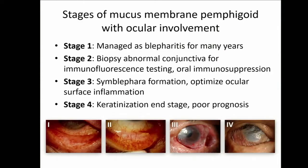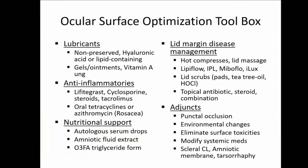In staging the disease, at stage one this is when people don't really know that it is MMP and it's just treated as blepharitis. Stage two is often when we'll do a biopsy because something abnormal is noted. Stage three, some symblephara have formed already, and stage four, unfortunately, the keratinization has occurred. This is the ocular surface optimization toolbox, and these patients often need something in every category in the short and long term, often indefinitely if you're going to do an intervention.